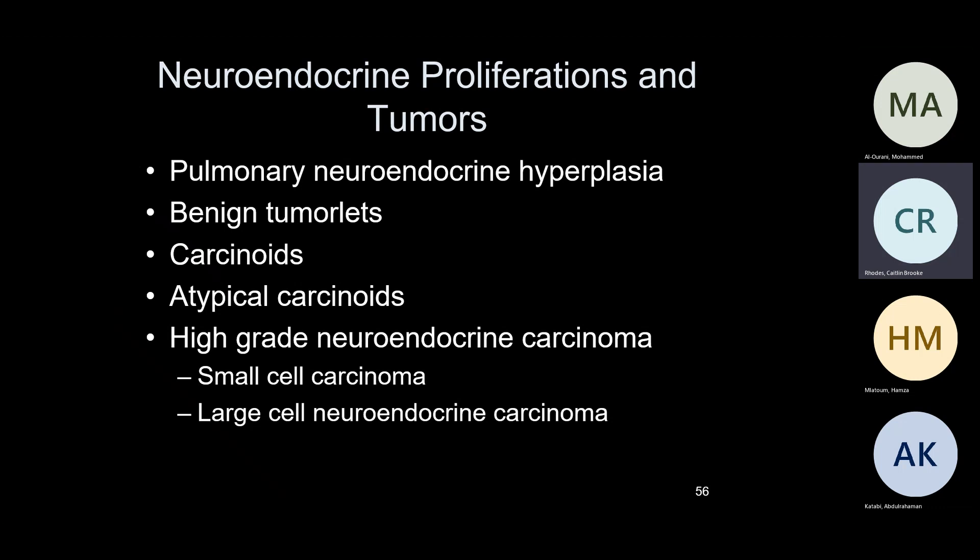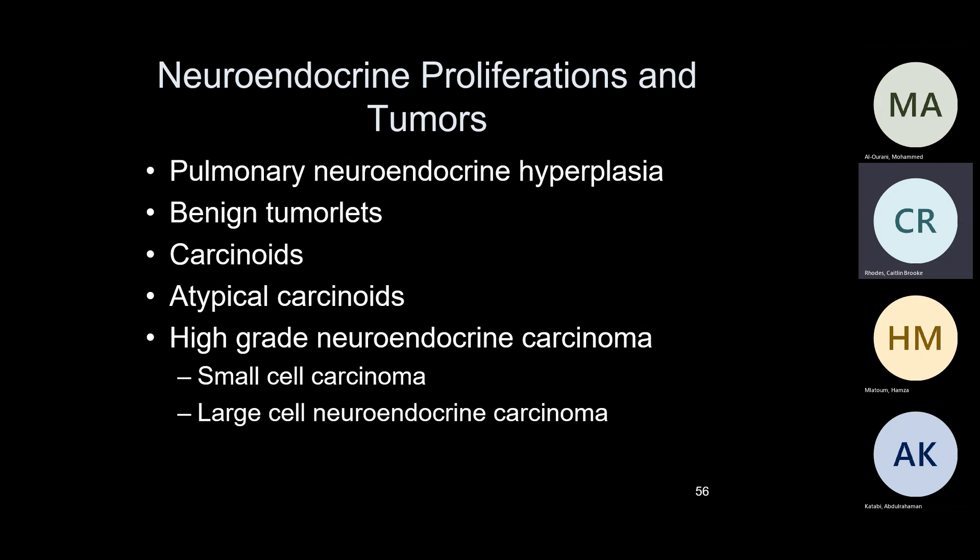Now let's go into neuroendocrine tumors. These all arise from neuroendocrine cells. We have normal neuroendocrine cells in the bronchial tree. Are neuroendocrine tumors confined to the lungs? No — you can see neuroendocrine cells in the GI system as carcinoid tumors, in the pancreas, in the bladder, and prostate — small cell carcinoma of the prostate, just like small cell of the lung. What's a tumor in the skin that looks like a small cell? Merkel cell — it's just like small cell in the skin, a neuroendocrine tumor, and a pretty vicious tumor.